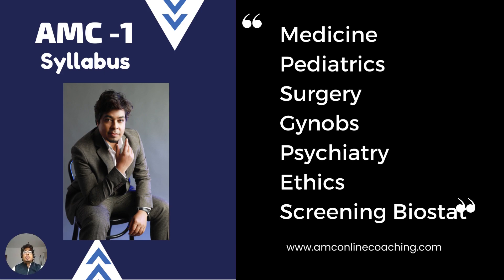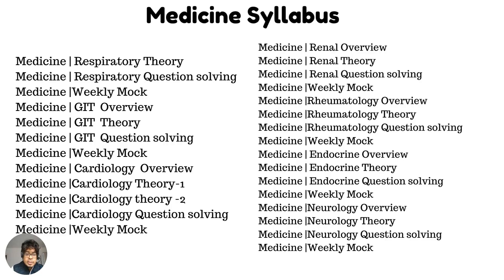I'll show you the syllabus of our course so you get an idea. This is the medicine syllabus. Medicine comprises respiratory, GIT, and cardiology — cardio has a lot of intense classes. Then renal, rheumatology, endocrinology, and neurology — neurology also has more intense classes. You need to finish theory, recalls, questions, and question banks. All these associations and orientations are important.